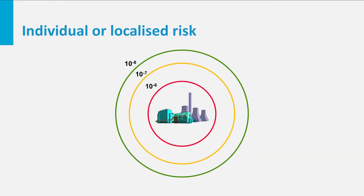The probability that one person in one particular year is killed can be put on so-called risk contours. Those contours surround a potentially hazardous place, such as a chemical plant or a nuclear power plant. All points on a given contour have the same probability. It is customary to draw these lines with negative powers of 10, like 10⁻⁵ or 10⁻⁶. I have drawn neat circles here, but in reality these contours can be very irregular.